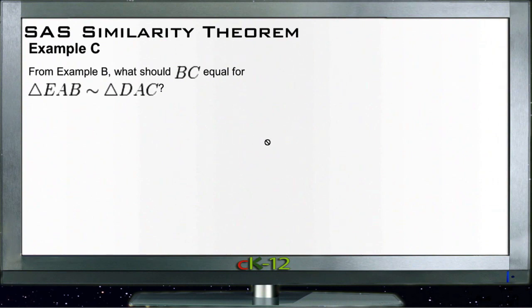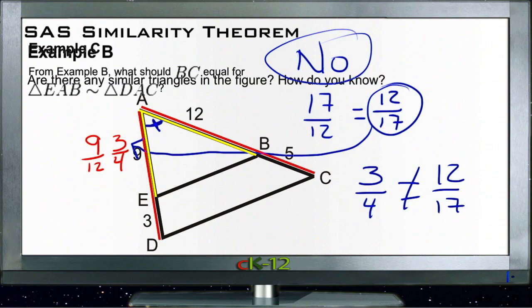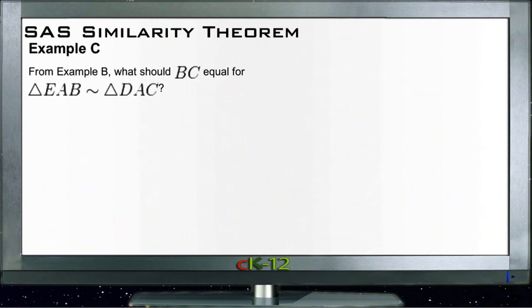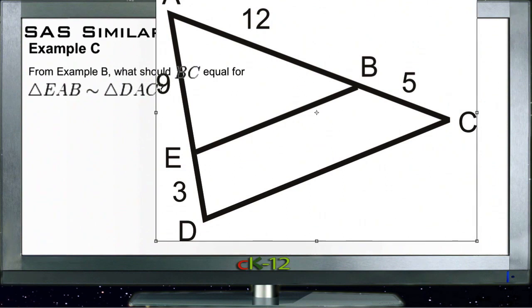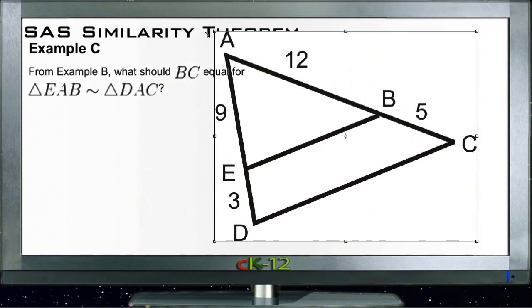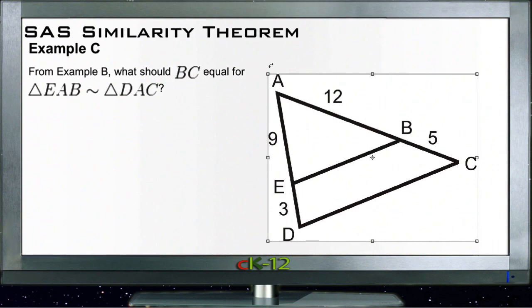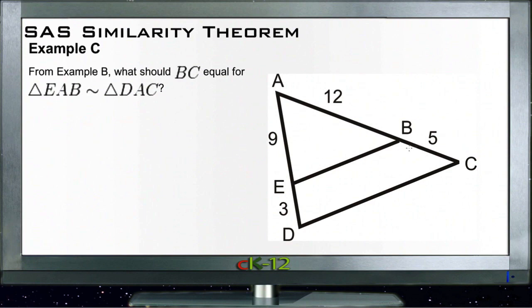All right, let's take a look at Example C. Example C says, from Example B, what should BC equal in order for triangle EAB to be similar to triangle DAC? Let me bring that other triangle back over here real quick. Let's take a look at it again. There we go. Let's take a look at that again. It says what should BC equal so that the two triangles are similar?